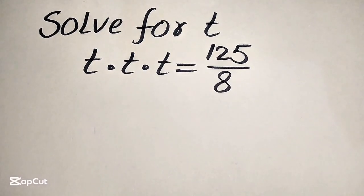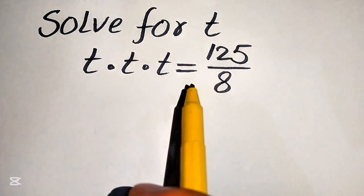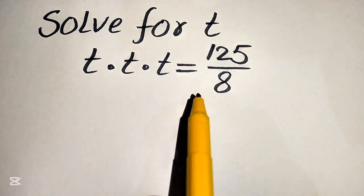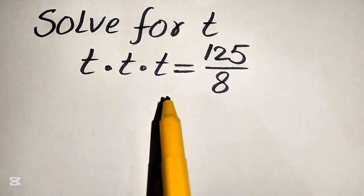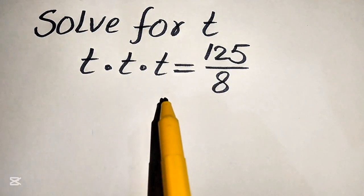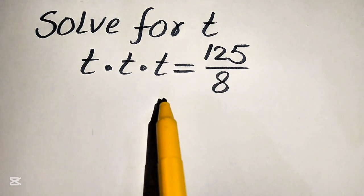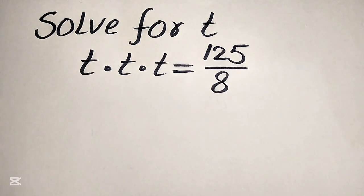Hello everyone, welcome to solve this nice algebra problem. Here we have t times t times t equals 125 divided by 8, and we solve this problem for the values of t. We find all the roots of this equation, whether these roots are complex or real. At the end of this question, I will give you an assignment related to this problem — I hope you solve it and write your answer in the comment section.